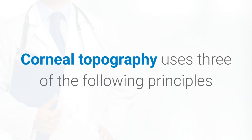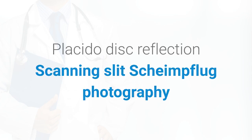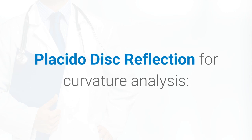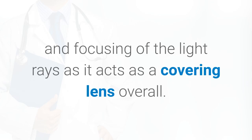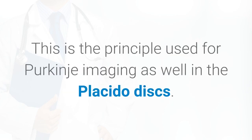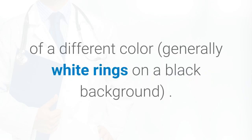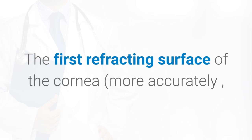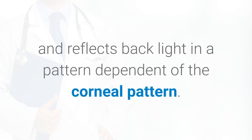The general principles of corneal topography use three techniques: Placido disc reflection, scanning slit, and Scheimpflug photography. For Placido disc reflection and curvature analysis, the primary optical aim of the cornea is refraction and focusing of light rays as it acts as a converging lens. All non-ideal refracting surfaces reflect some light — this is the principle used for Purkinje imaging. The Placido disc is a device made of concentric rings of different colors, generally white rings on a black background.